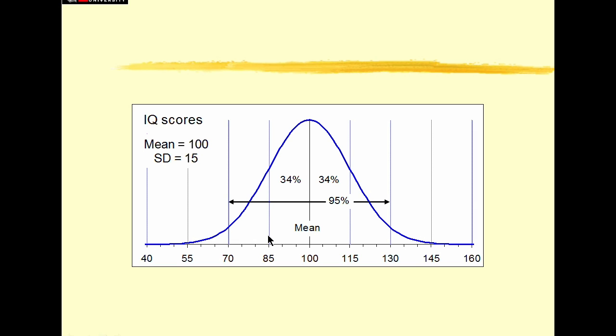And one further useful rule of thumb is roughly 95% of people will have IQs between two standard deviations below and two standard deviations above. So between 70 and 130, about 95% of people, which means we've got 5% in the tails, 2.5% in each tail. And once you get beyond three standard deviations, then you're looking at just a couple of people in 1,000. So really quite rare.